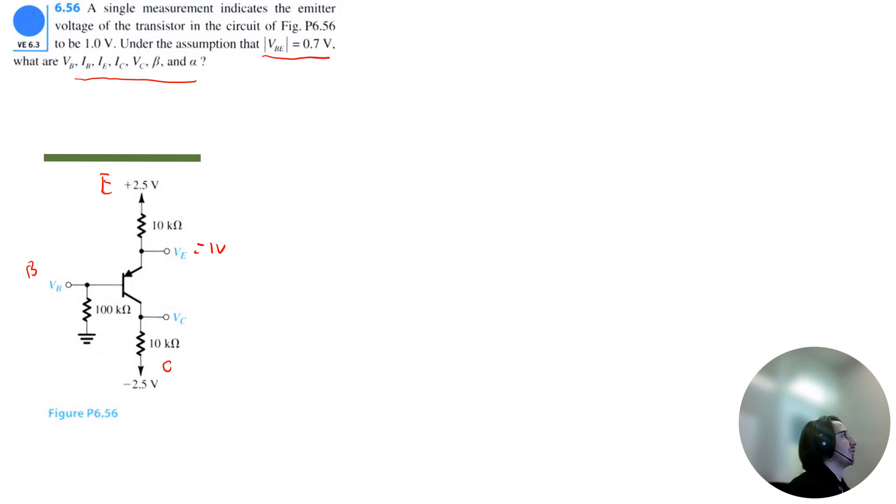So I'm going to try my best to go in order. So first we want to find base voltage. Well, that's pretty simple. So that's going to be equal to the emitter voltage minus the voltage drop between base and emitter. So that's going to be 1 volt minus 0.7 volts. So base voltage is 0.3 volts.